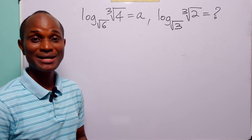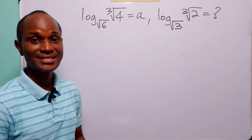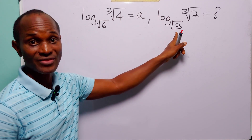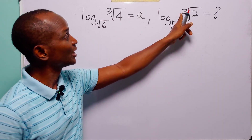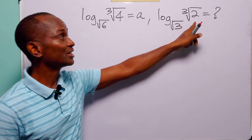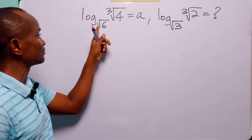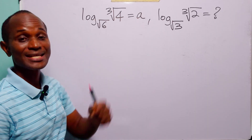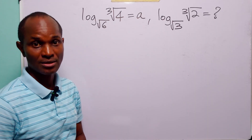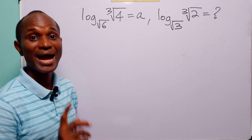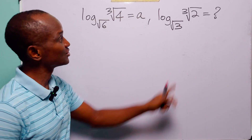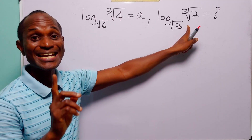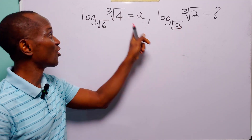Hello and welcome. In this math tutorial, our task is to find the value of log to base root 3 of the cube root of 2, given that log to base root 6 of the cube root of 4 is equal to a. In short, we are required to find the value of this expression in terms of a.